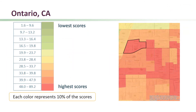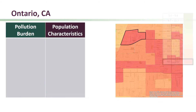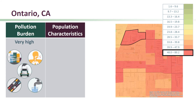Now, let's go to another census tract just outside of Ontario in San Bernardino County. This tract also scores in the top ten percent of scores across the state. However, the factors contributing to the pollution burden and population characteristics scores here are different. In this census tract, the pollution burden score is very high relative to the rest of the state and has high scoring indicators like ozone, PM2.5, diesel particulate matter, traffic density, and drinking water.